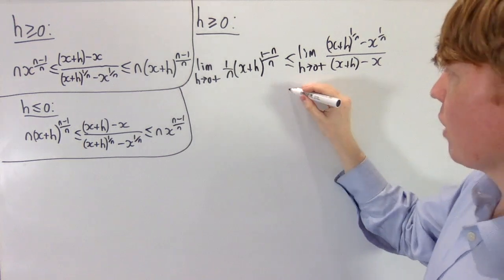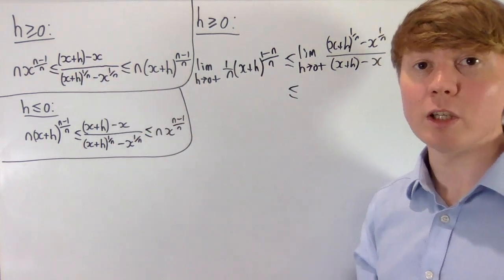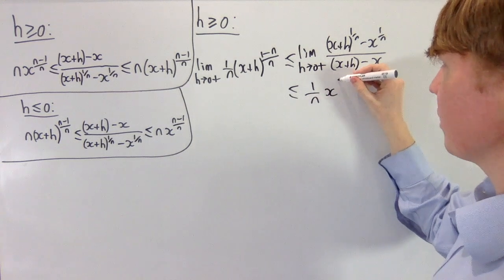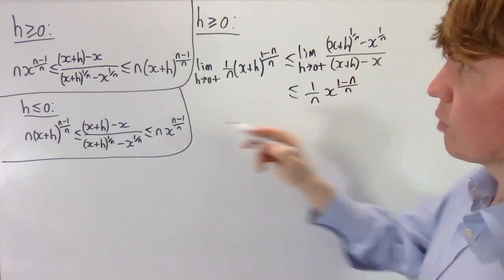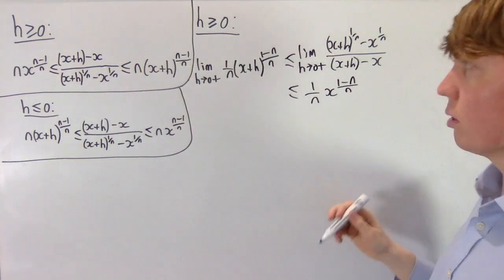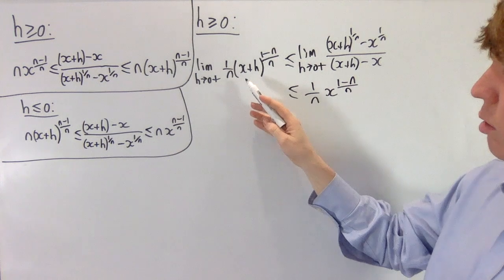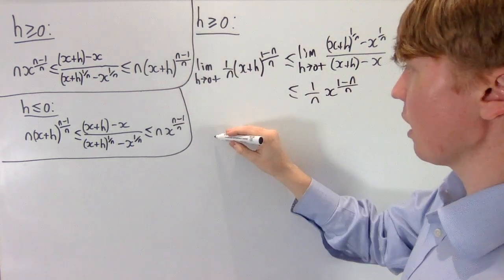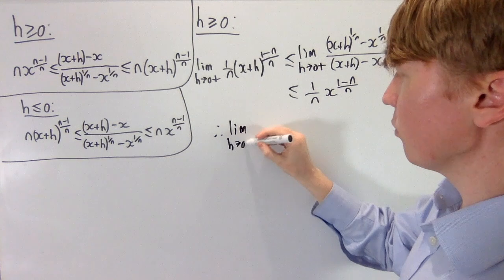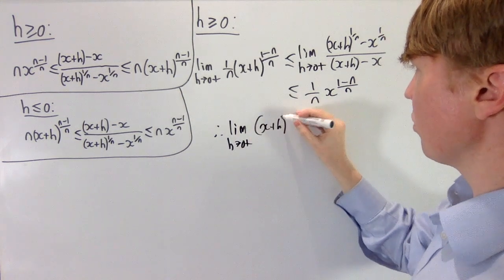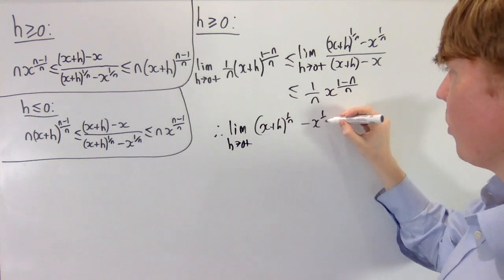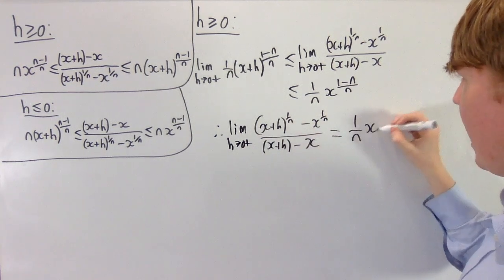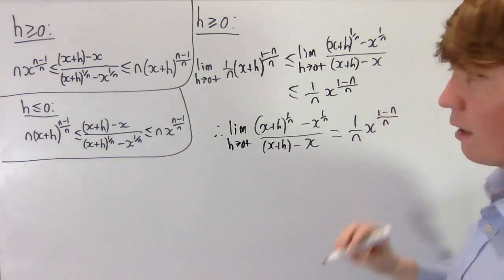We can also get an upper bound by taking the reciprocal of the previous lower bound, which doesn't even depend on h, so this is less than or equal to 1 over n times x to the 1 minus n over n. Our lower bound is actually going to converge as h tends to 0 to the exact same thing as our upper bound. So this is enough to say that the limit as h approaches from above is equal to 1 over n times x to the 1 minus n over n. So our right derivative is equal to 1 over n times x to the 1 minus n all over n, as we would expect.